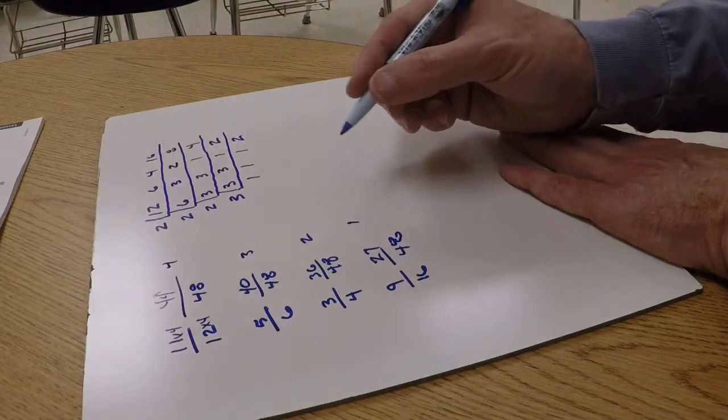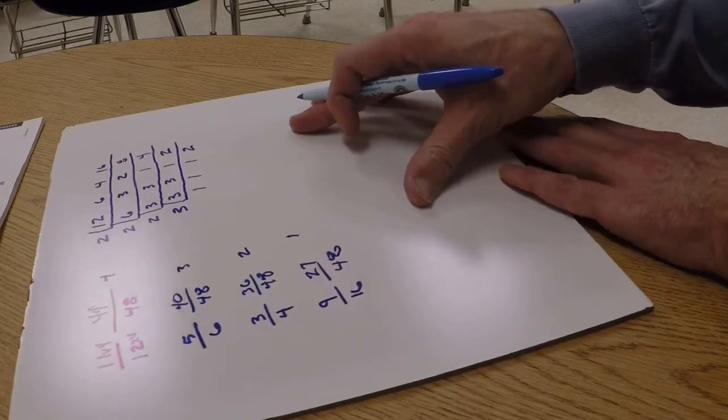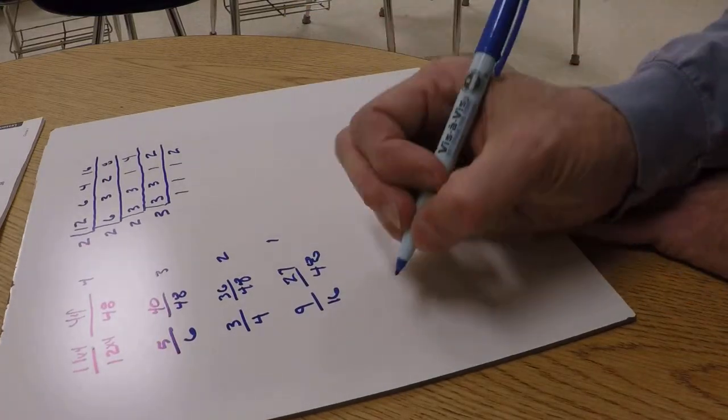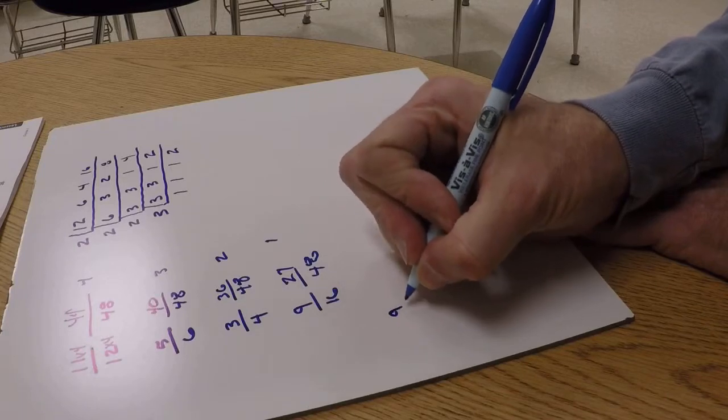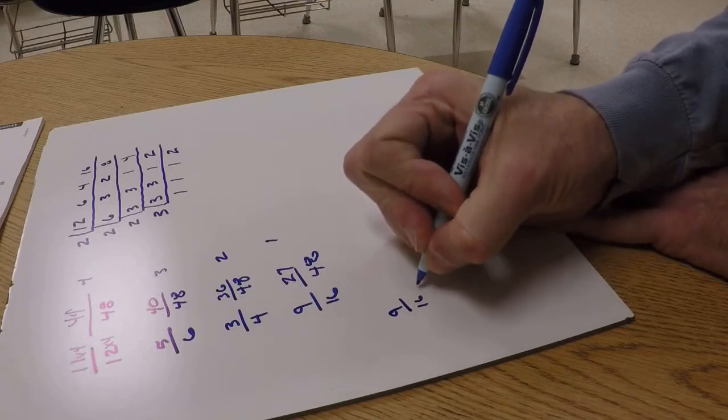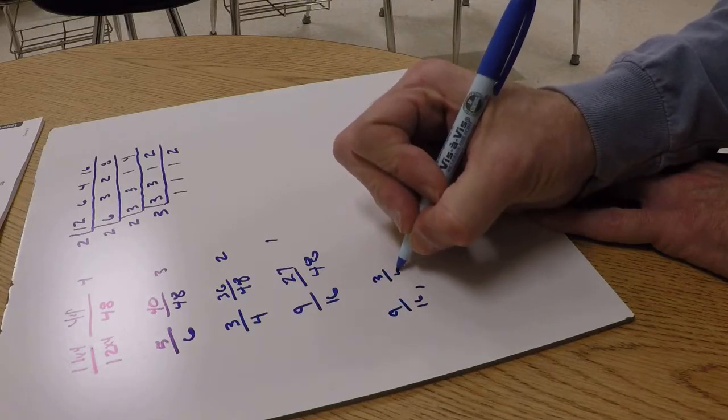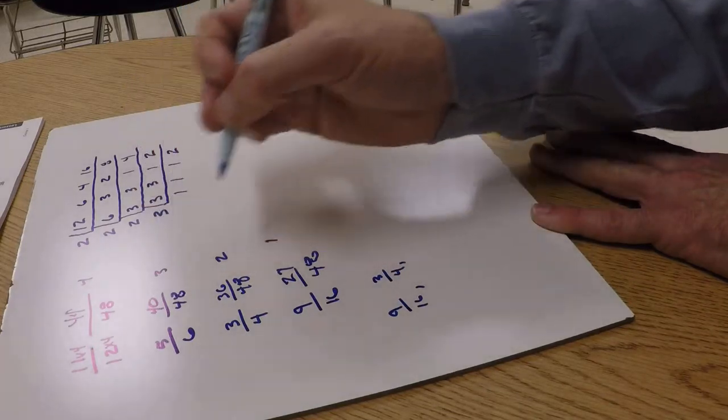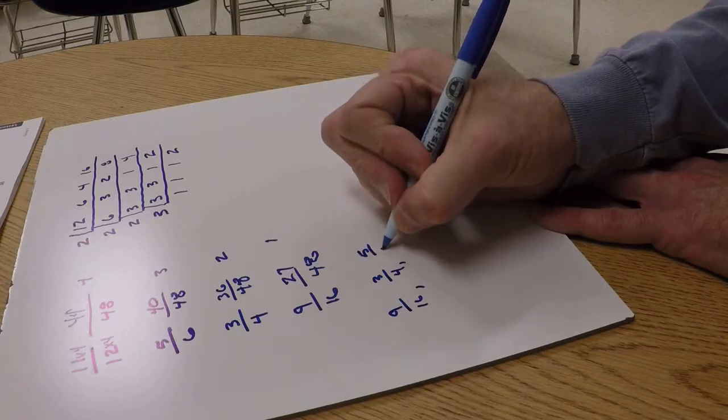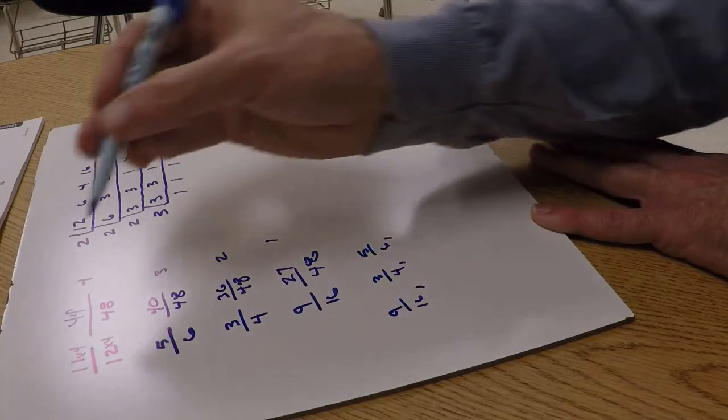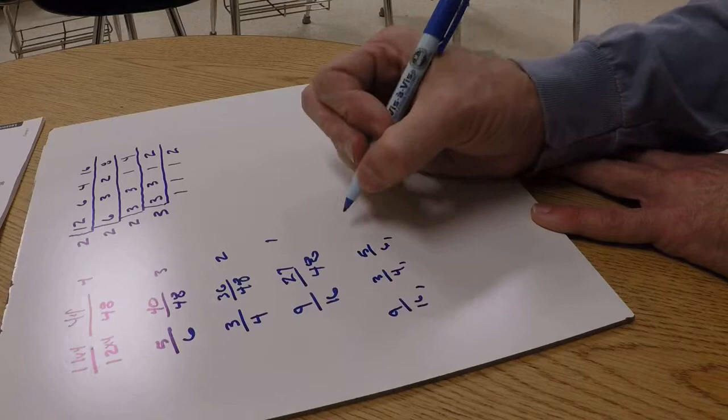So if I were to put those in order from least to greatest, it would be the 9 over 16, number 2 would be the 3 over 4, number 3 would be the 5 over 6, and then we have the 11 over 12.